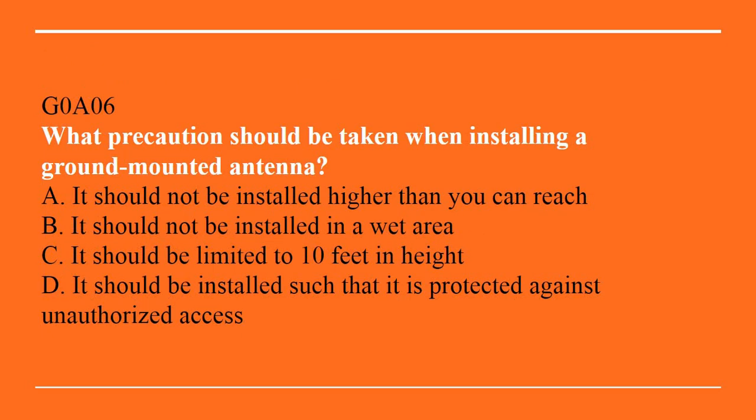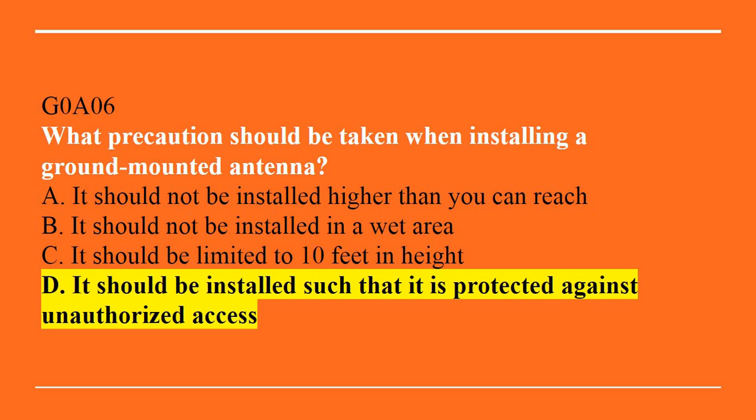G0A06: What precaution should be taken when installing a ground-mounted antenna? A, it should not be installed higher than you can reach. B, it should not be installed in a wet area. C, it should be limited to 10 feet in height. Or D, it should be installed such that it is protected against unauthorized access. The answer is D — it should be installed such that it is protected against unauthorized access.